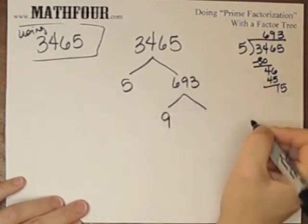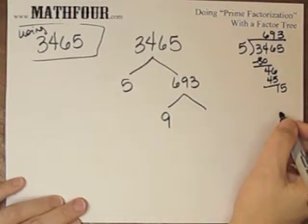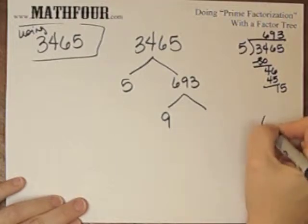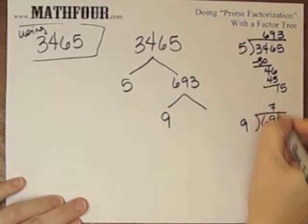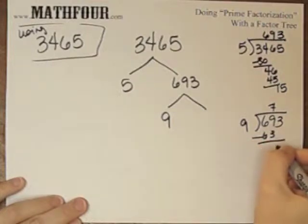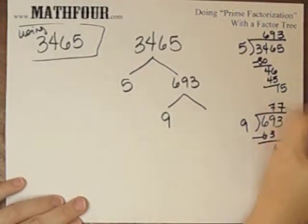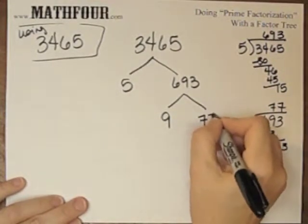9 goes into 69. Let's see, 9 times 7 is 63. And oh, look, there it is again. So this is 9 times 77.